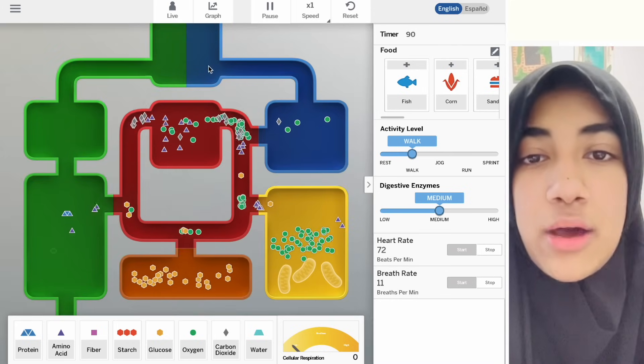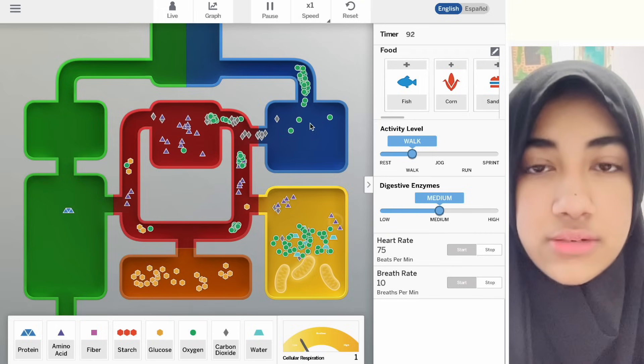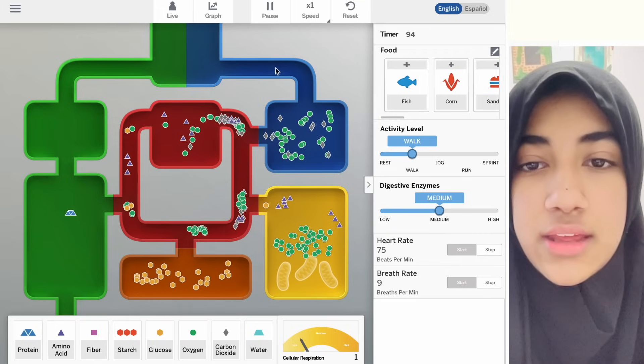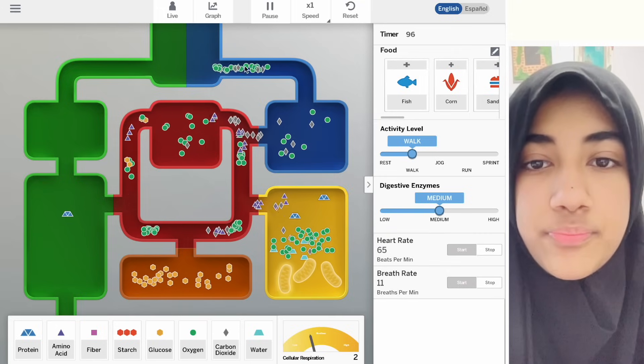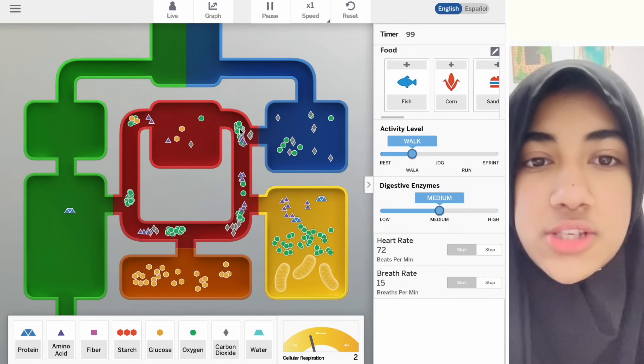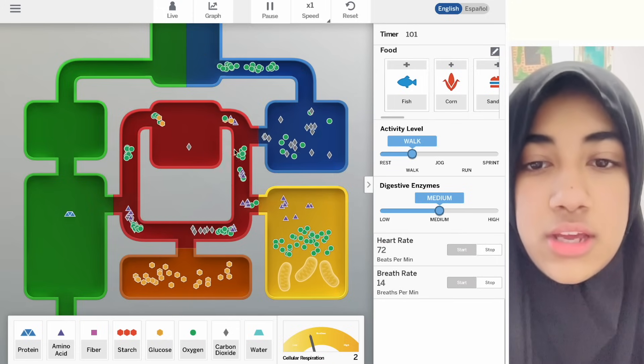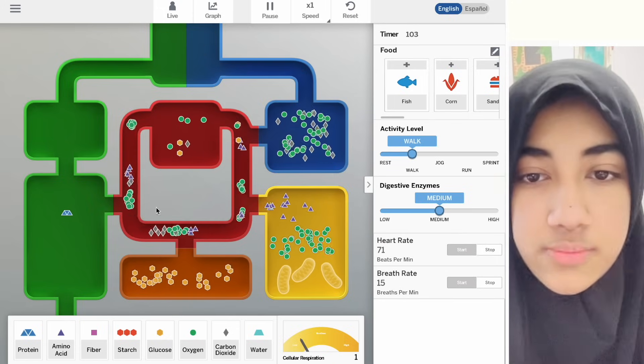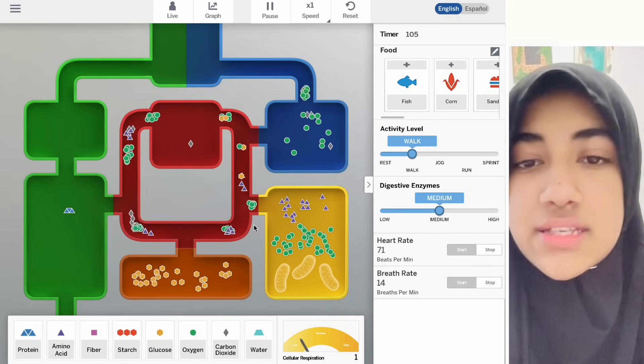Meanwhile, this is our mouth. Green is oxygen. So we are breathing in and we are breathing out. This oxygen enters our circulatory system.